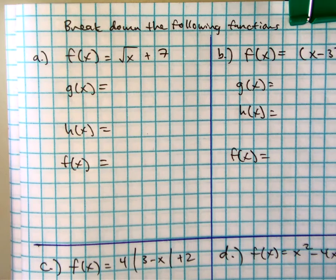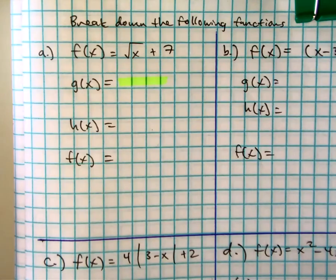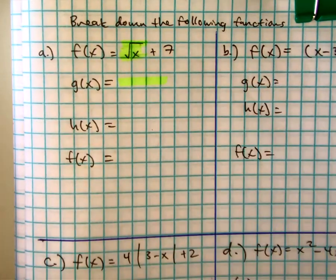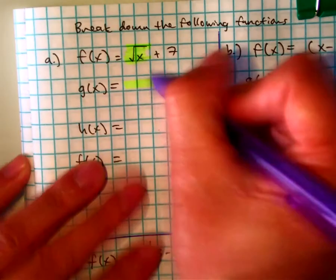All right, so I'm trying to think to myself, what can I make g of x? If I make g of x the square root of x,